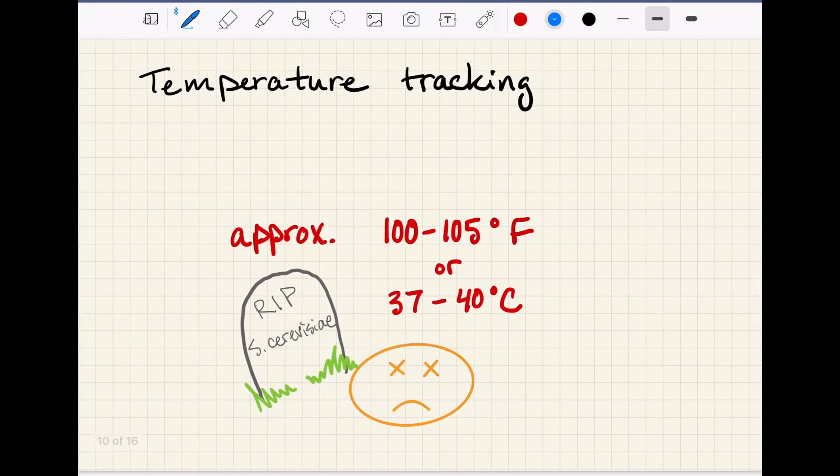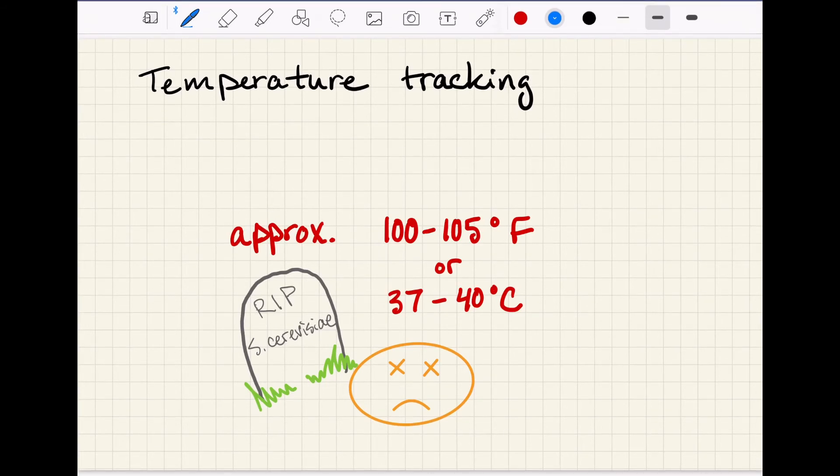The second reason we care about fermentation rates is because the faster the fermentation goes, the more heat is generated, and too much heat can kill or stress out the yeast, which can lead to sluggish, stinky, or stuck fermentations. So when we check bricks, we usually also check temperature to make sure we're not approaching the danger zone of about 100 degrees Fahrenheit or about 40 degrees Celsius.